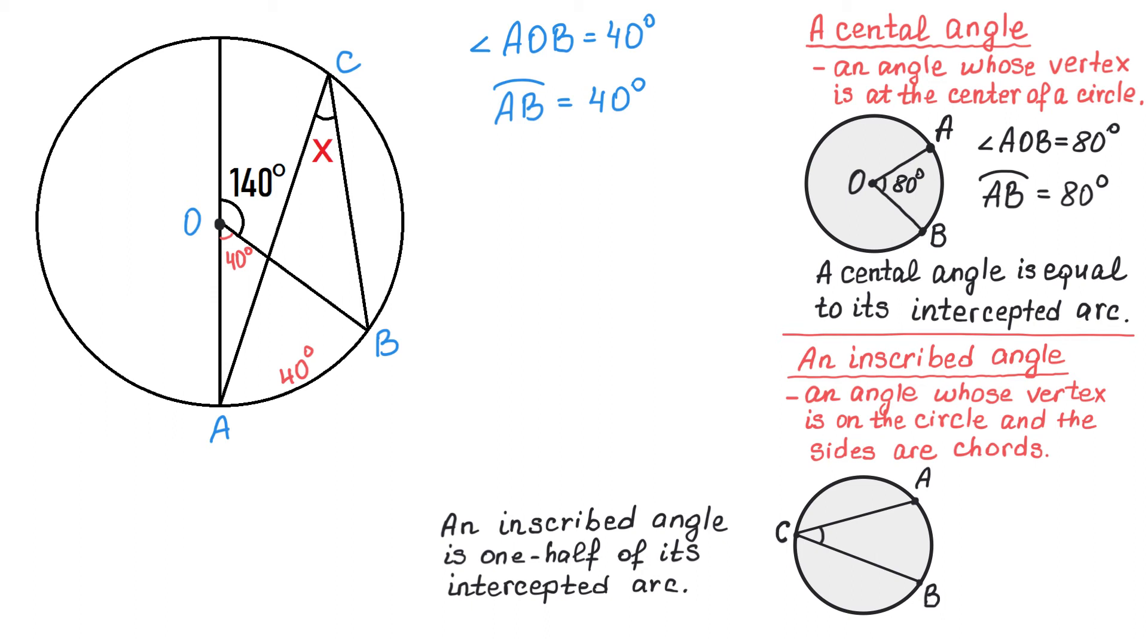For example, let's say that the arc AB measures 70 degrees. Then the angle ACB is going to be half of 70 degrees, which equals 35 degrees.